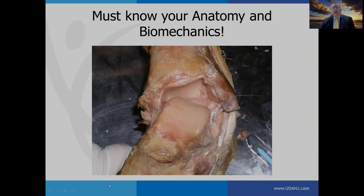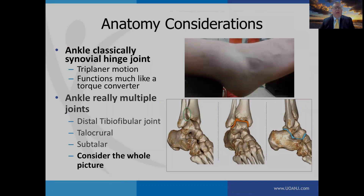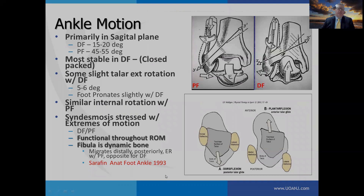In order to be proficient at managing ankle sprains, you need a thorough knowledge of anatomy and biomechanics. The ankle is classically considered a synovial hinge joint, but it's really multiple joints: the distal tib-fib joint, the talocrural joint, and the subtalar joint. All these joints need to be considered together when we look at the picture of an ankle sprain or ankle injury.